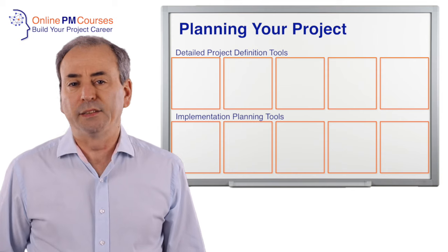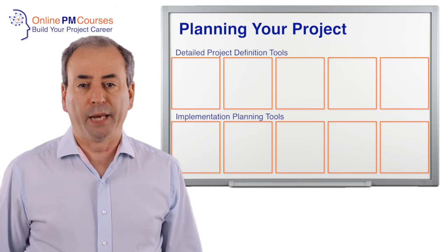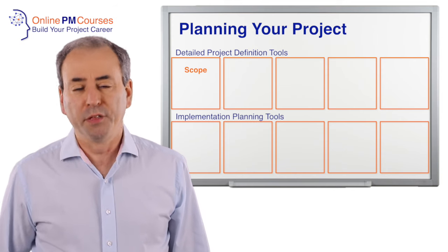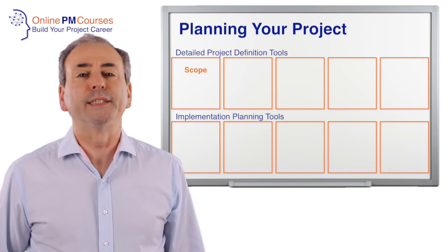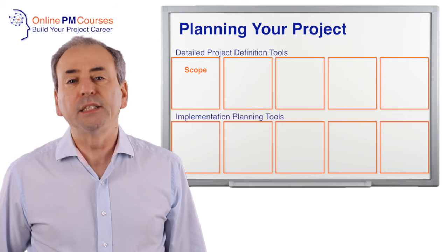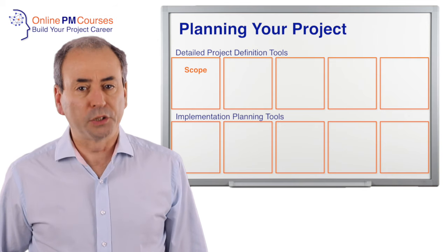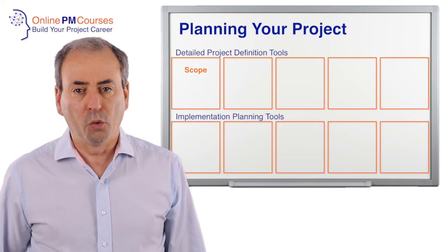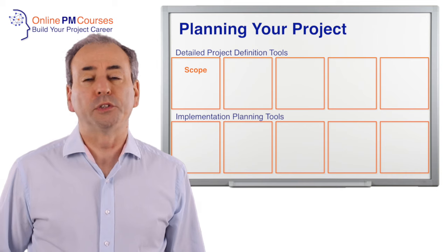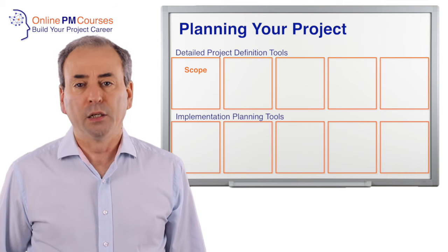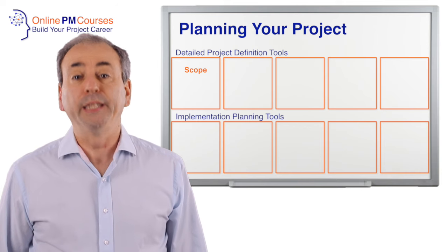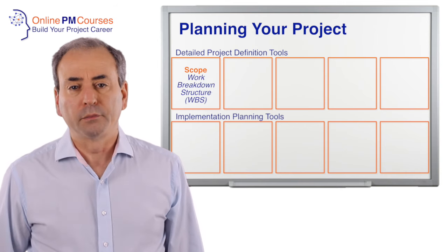The first thing that needs to go into your plan is the scope of your project — the things that you're going to need to do. This sets out all the tasks or activities, and the best tool to use to create your scope plan is a work breakdown structure.